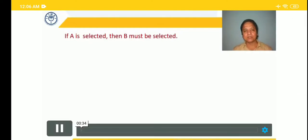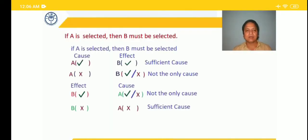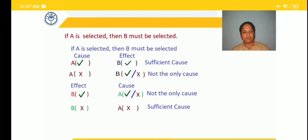In a team, let's talk about selection of two persons A and B. The statement given is: if A is selected, then B must be selected. Here A is the cause and B is the effect. A being in the team is a sufficient cause for B to also be selected. So whenever the cause happens, the effect follows — A is there, B will also be there. If A is not there, the effect may or may not happen, as this is not the only cause for B's selection.